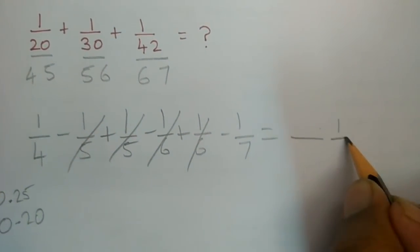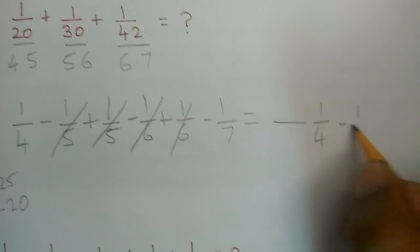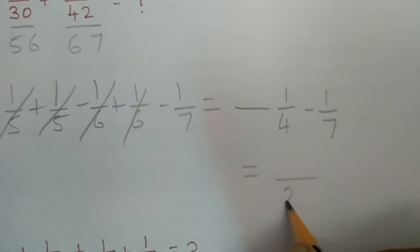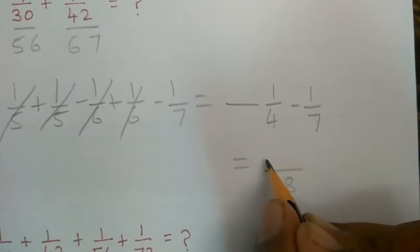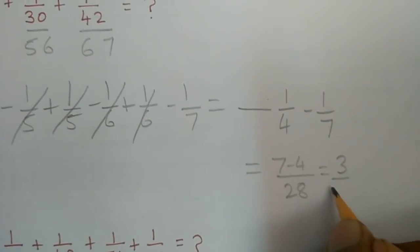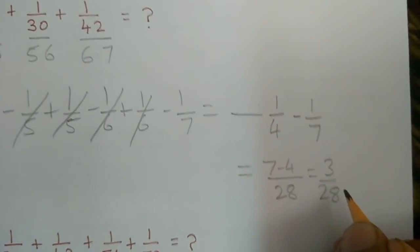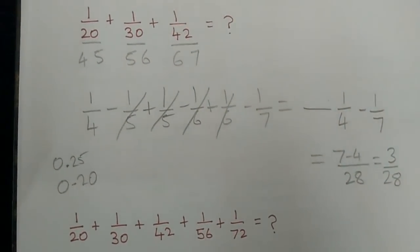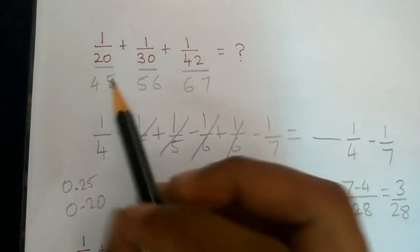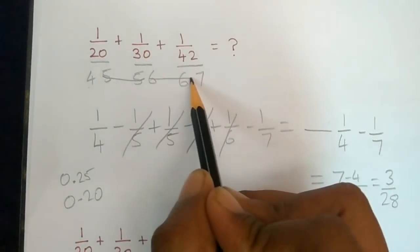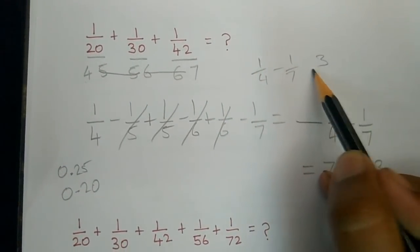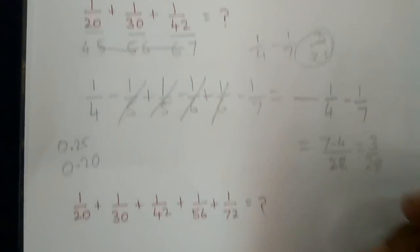The balance remaining is 1 by 4 minus 1 by 7. To solve this: 4 into 7 is 28, and the numerator is 7 minus 4 which is 3. So 1 by 4 minus 1 by 7 equals 3 by 28. That's how we solve it.